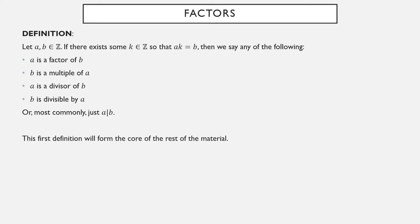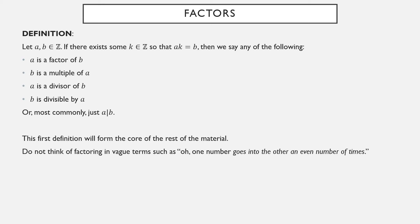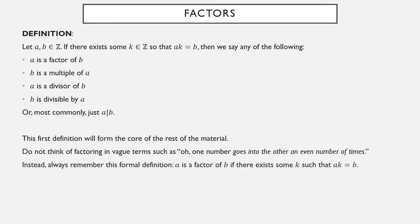This is the first definition of the course and it really underpins everything for quite some time. Don't think of factoring in terms of going into another number an even or whole number of times — those phrases you may have picked up over the years. Really learn it in terms of this formal definition: a is a factor of b if there exists a k so that a times k equals b. This will make future work in theorems and proofs so much easier. Learn it on its own terms.